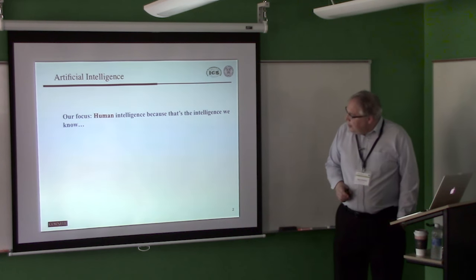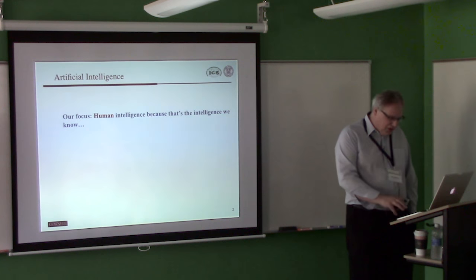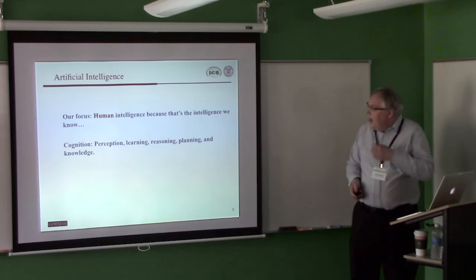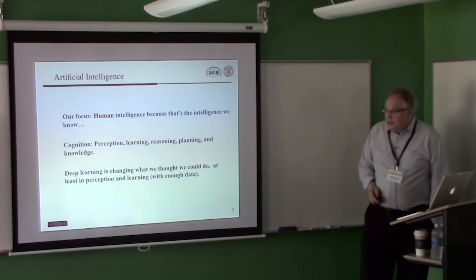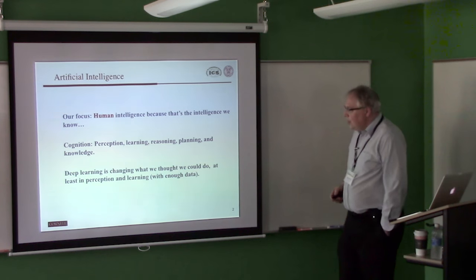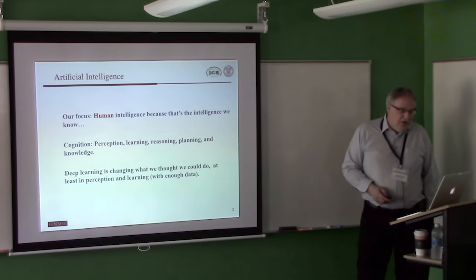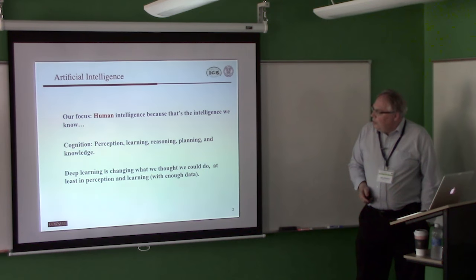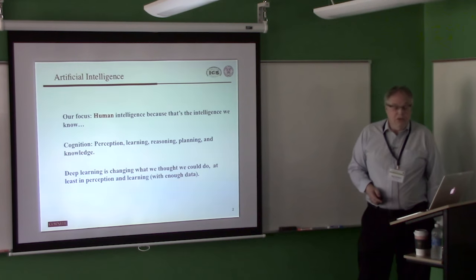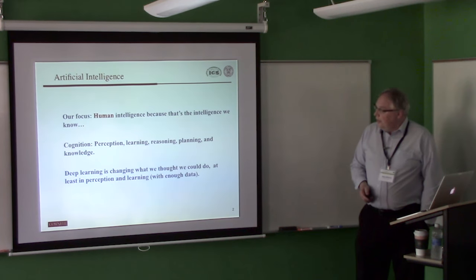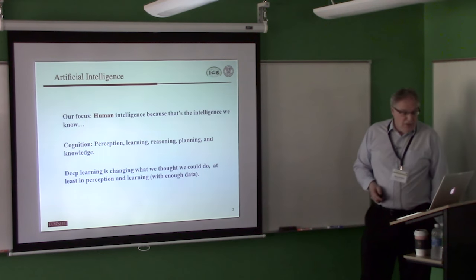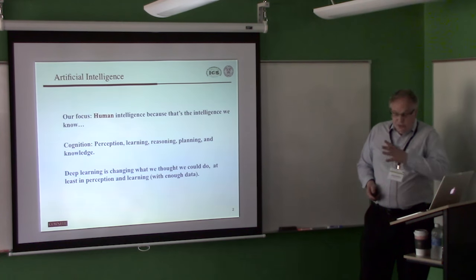So mostly when we think of AI, we think of human intelligence, and I like to say that's because that's the intelligence we know. And we boil it down to perception, learning, reasoning, planning, knowledge. And of course, the current advance in machine learning, especially deep learning, has really changed what we thought we could do, at least in perception and learning if we have enough data. So that's very encouraging. And actually a lot of the concerns about AI, about AI safety and where things are going, are of course driven by these advances.